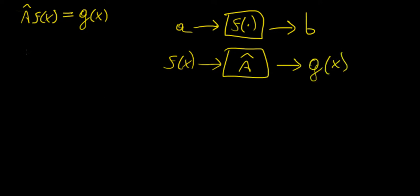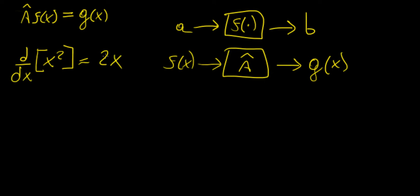To give you an example of an operator, we're going to take the differential operator d over dx. What this does is it acts on something like x squared, and this is going to give us 2x. So we know immediately that we took one function and we got out a different function. The same holds true for constants — something as simple as a constant like 3 times some function of x is going to give us another function distinct from f, because we are multiplying by 3.